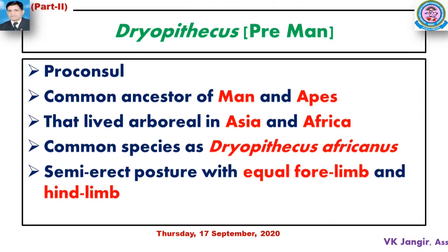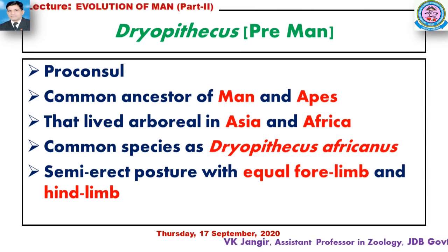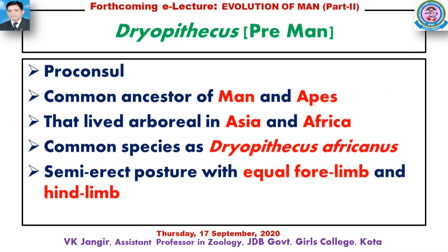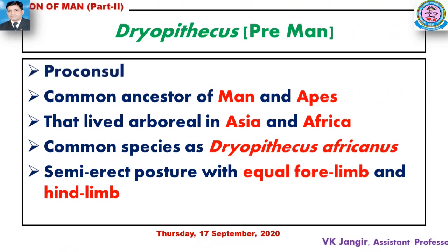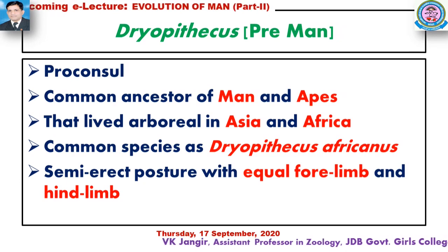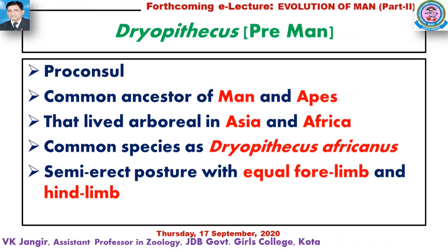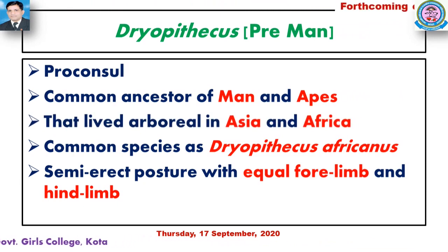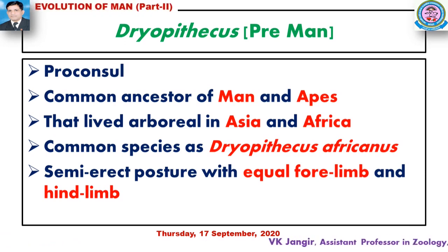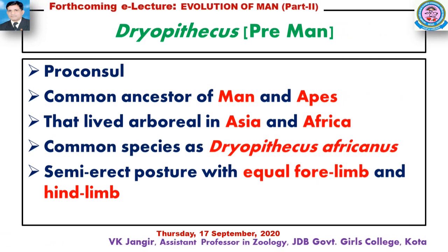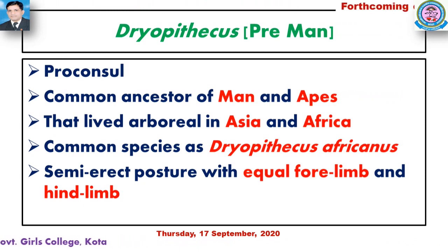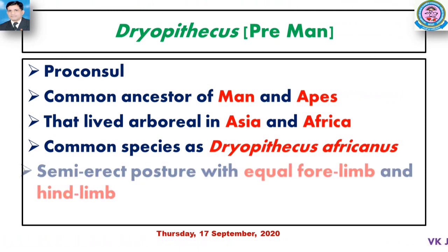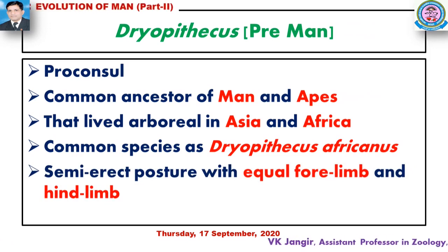Now let's talk about Dryopithecus. It had a semi-erect posture with equal forelimbs and hindlimbs.